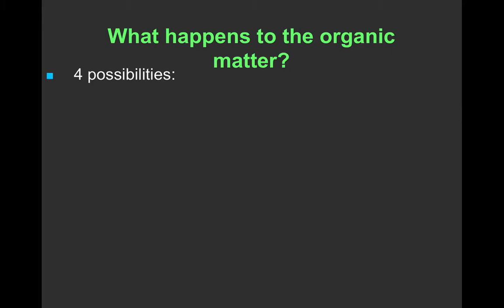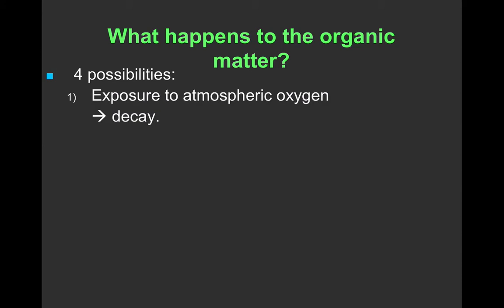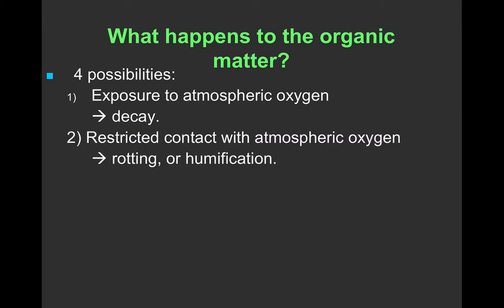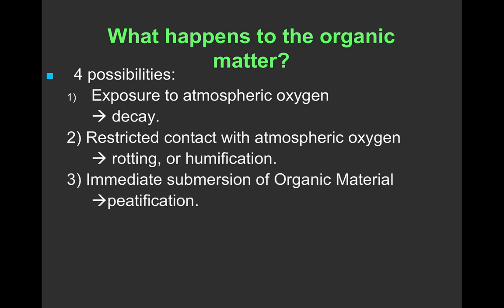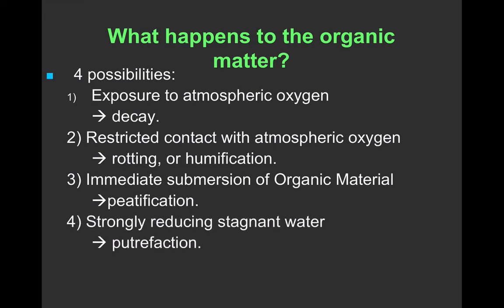The organic material in these environments, when it dies, has four possible things that can happen to it. If it's exposed to atmospheric oxygen and bacteria, we see decay, and the result is no coal. If there's restricted contact with atmospheric oxygen, it'll rot and humify — it may be turned into a soil — and will certainly break down more significantly than required for coal formation. It could be immediately submerged, removed from oxygen, and start to turn into peat, the first stage of coal formation. Or it could fall into stagnant water and simply putrefy.